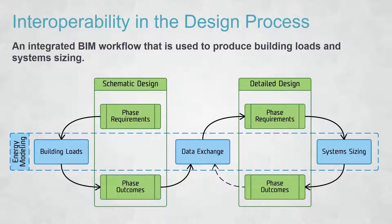The proper process is to define requirements for the schematic phase, produce your building loads as outcomes, then exchange that information as a prerequisite for your detailed design phase. This builds upon your systems in an iterative loop. Once you can continuously update this model from beginning to end, your systems are sized according to accurate loads that are continuously refined throughout the whole process — even if you didn't have much time to prepare loads at the start.